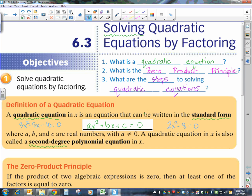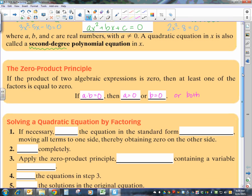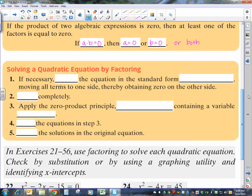Next we have the zero product principle. Our zero product principle says that if a times b equals 0, if you have two things that, when you multiply them together, give you 0, then either a has to equal 0, b has to equal 0, or both. So when you multiply two things together, if your product is 0, then one of those things has to be equal to 0. And that's what we use to solve quadratic equations. That principle is going to be used over and over again.